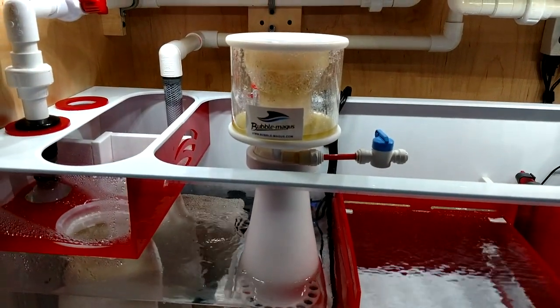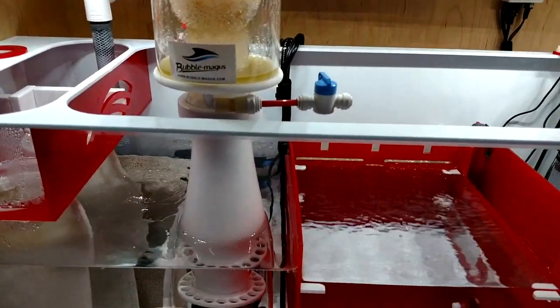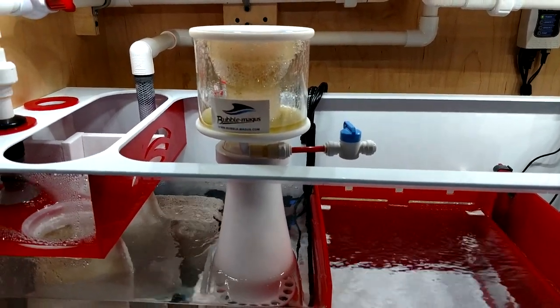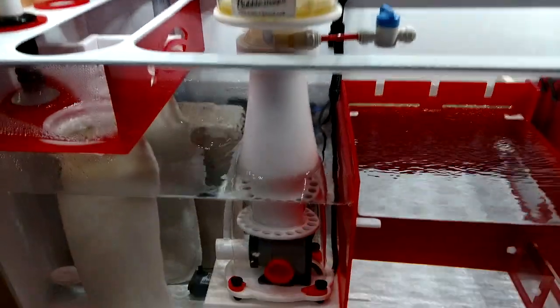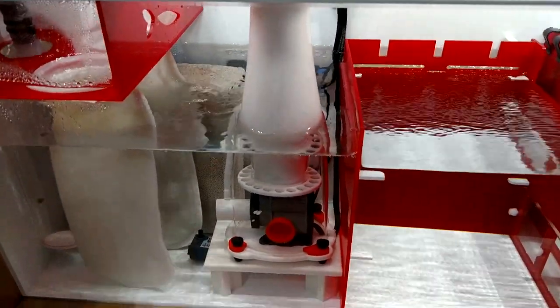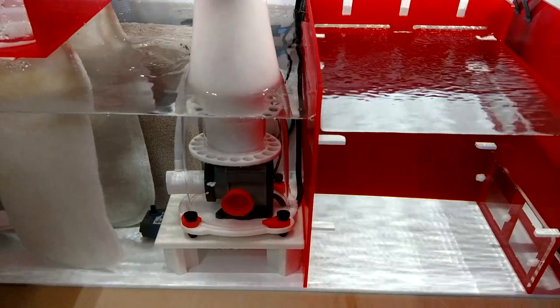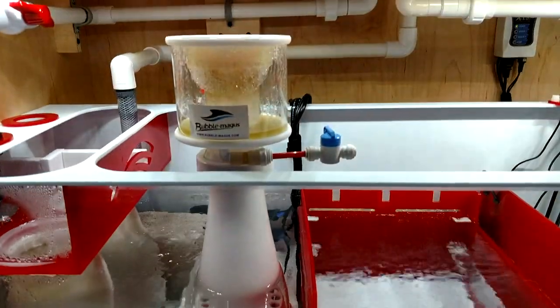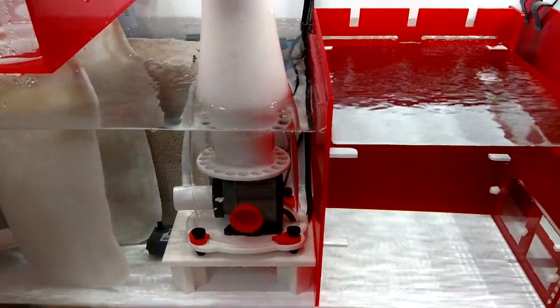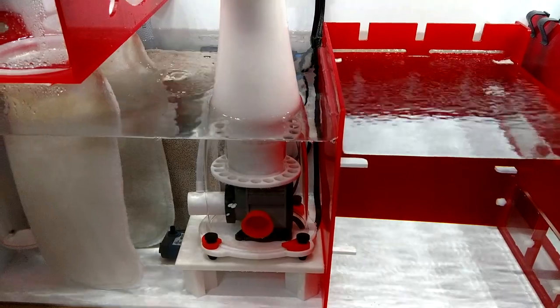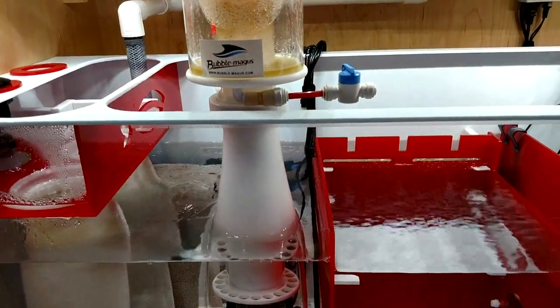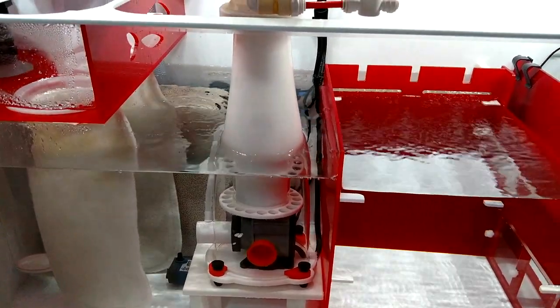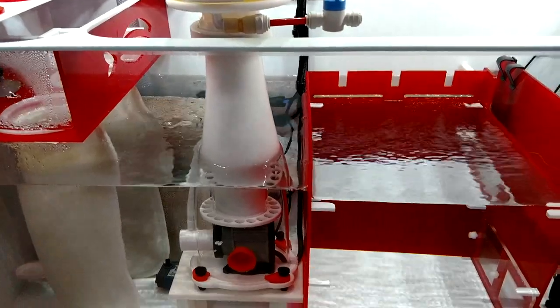I am running the Bubble Magus Curve 5 skimmer. This is the one that I had upstairs running the 75 that I took out and cleaned, and I was actually going to throw it on eBay, but I'm glad I didn't get rid of it. I like this one. I did set the water level depth, it is at I believe 6.5 inches. You can see this height, whatever this height is at, it's running really good. If you have the Bubble Magus Curve 5 skimmer and you're wondering what this water level is, just leave it in the comment section down below. I will measure it when this video is over.